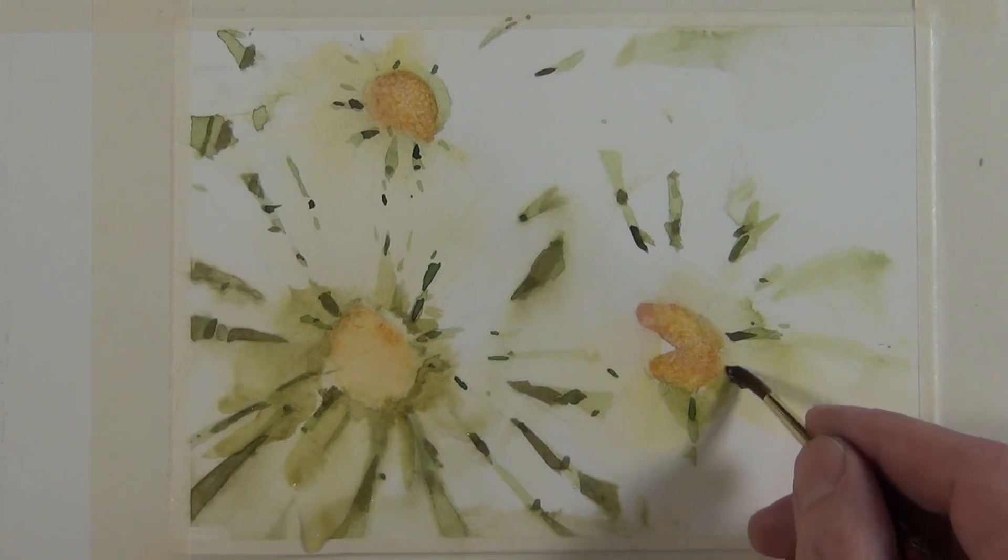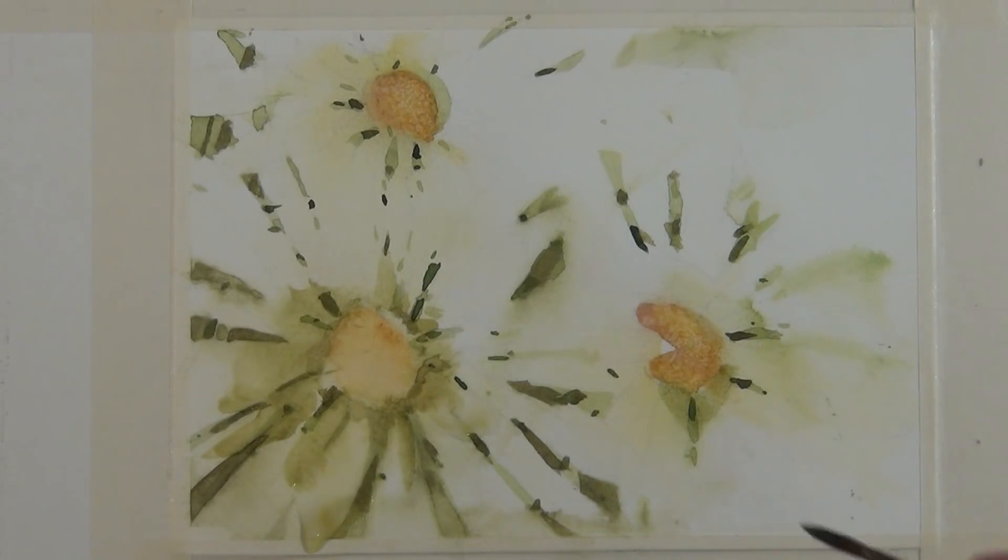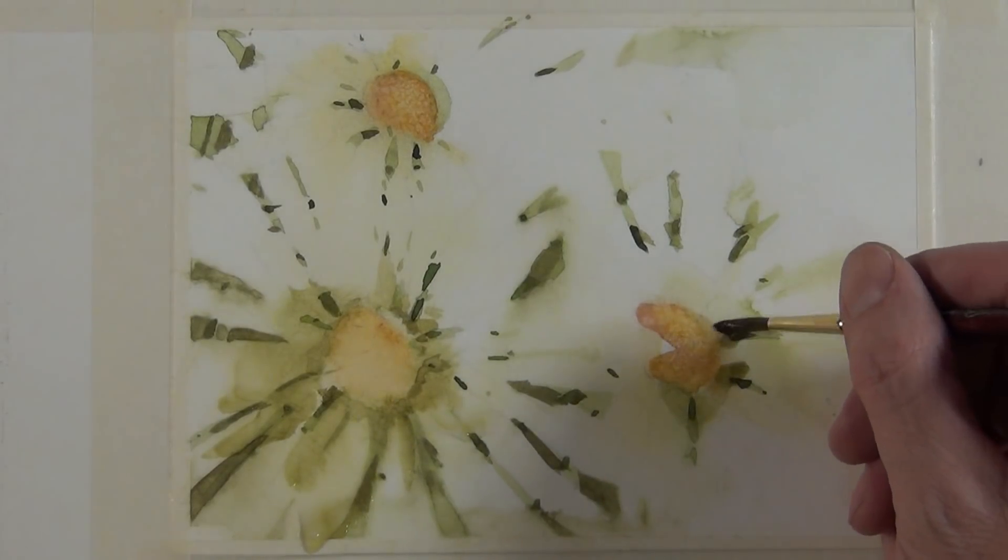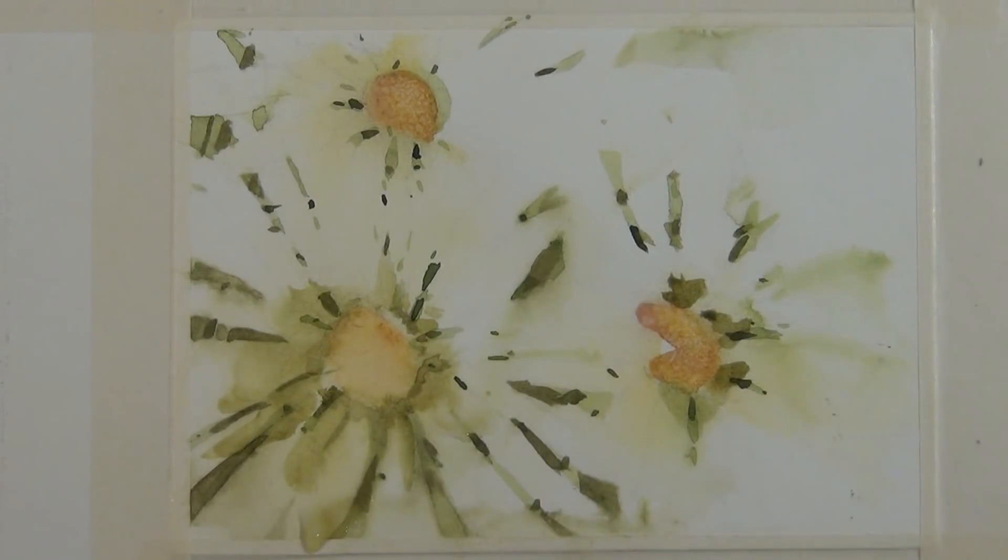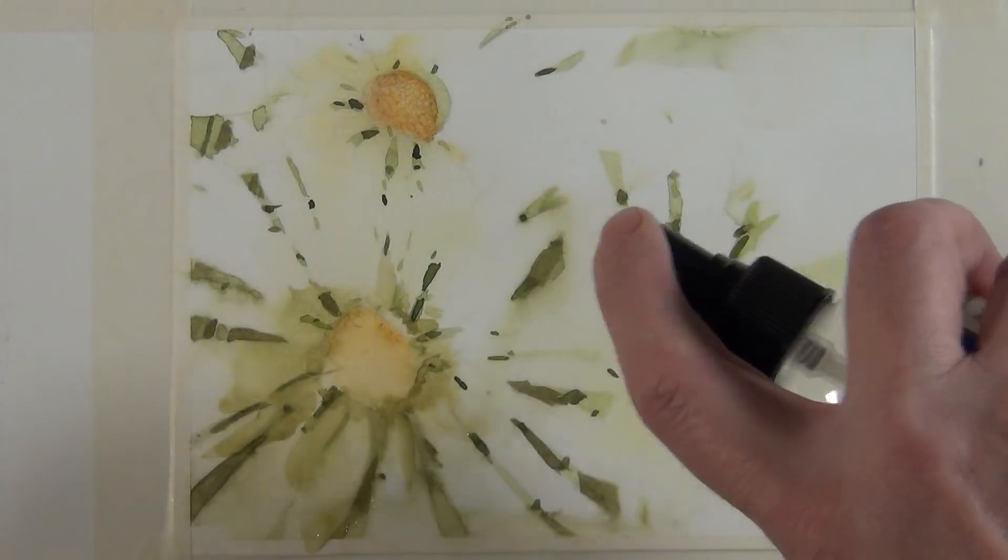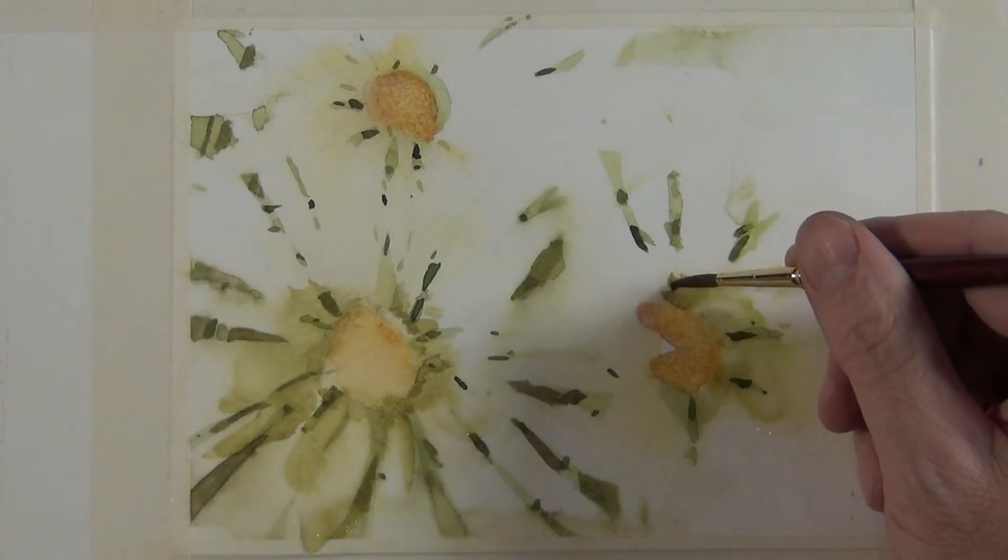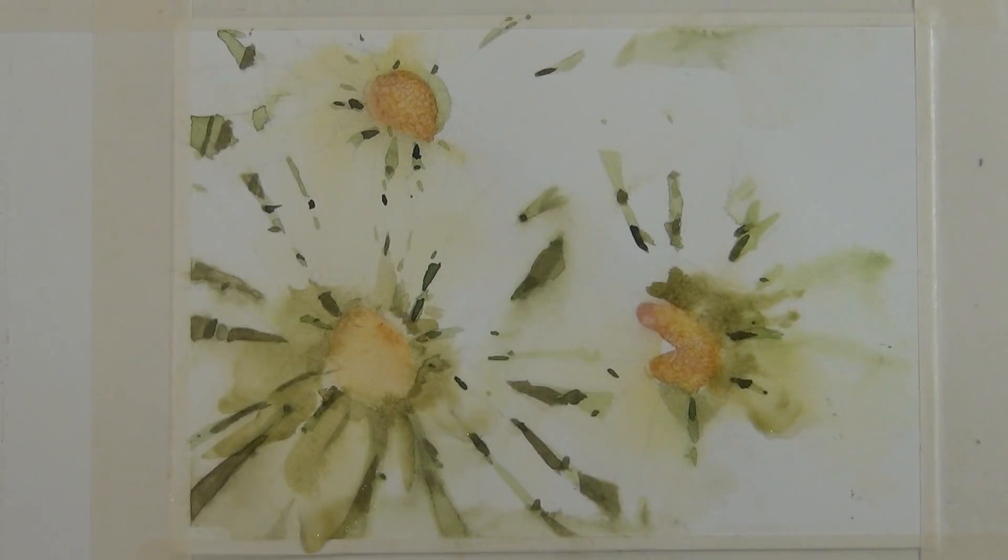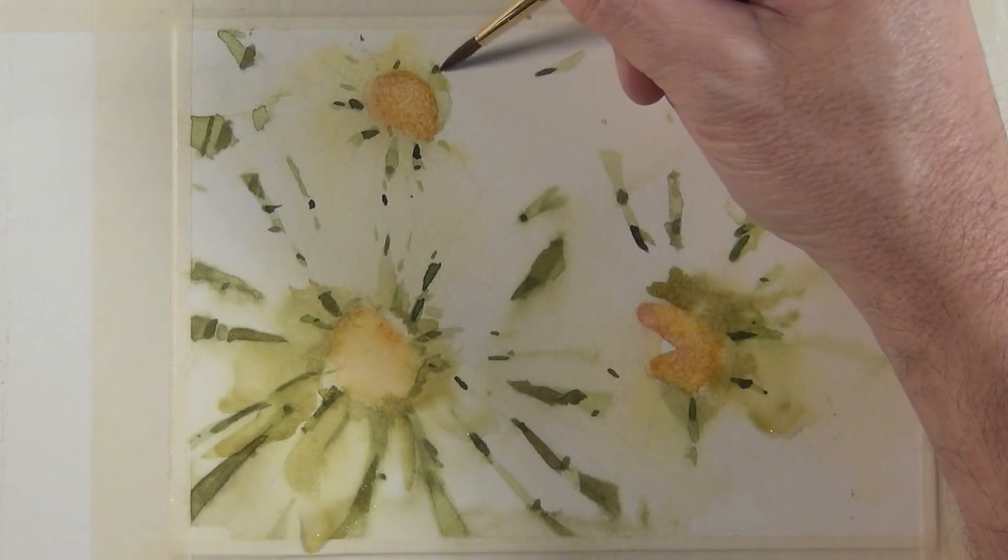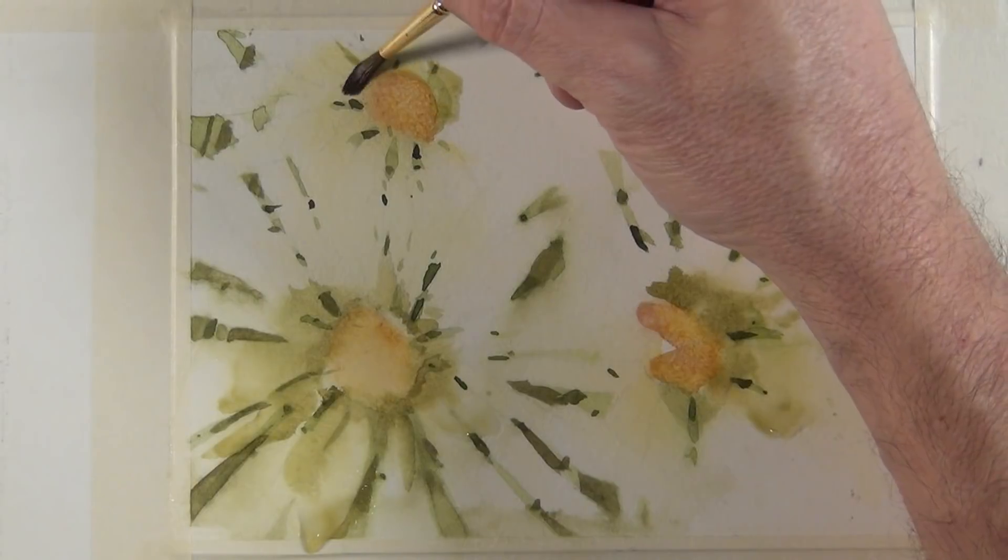I'm going to do a bit more of the same on this other flower. Take this sap green and then I'm going to hit it with a spray and diffuse it a little bit. So I have a variety of hard and soft edges in the composition. And I have a lot of lost edges.